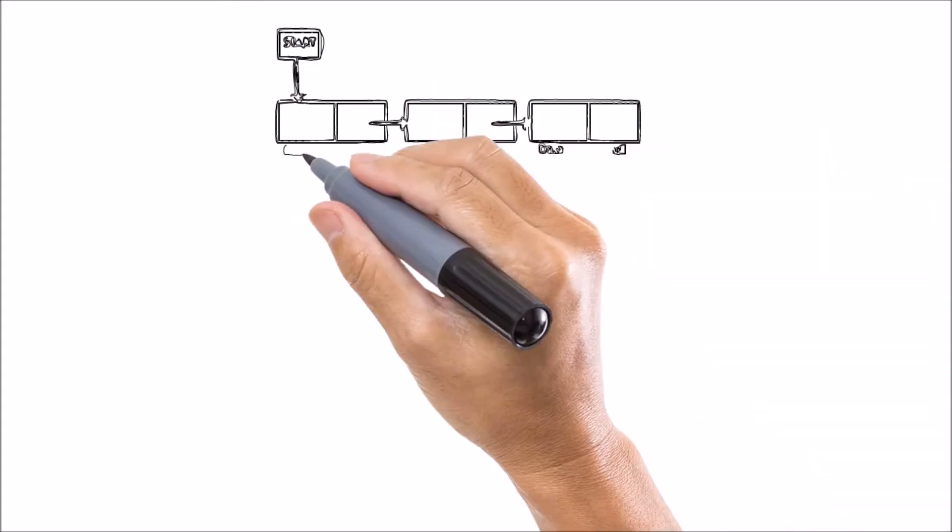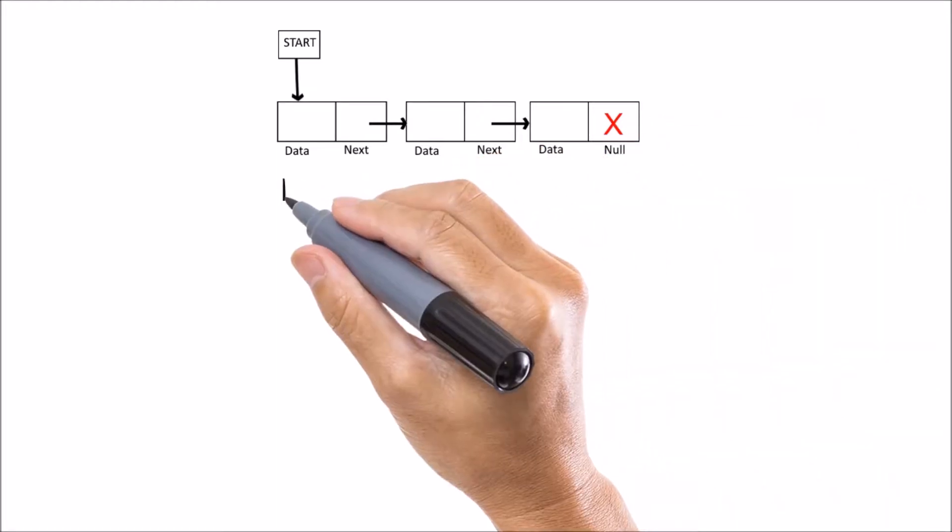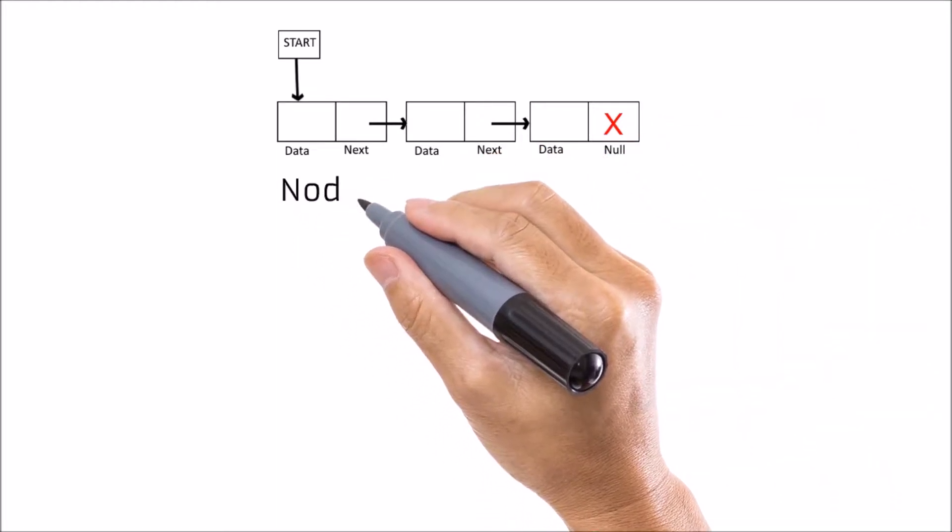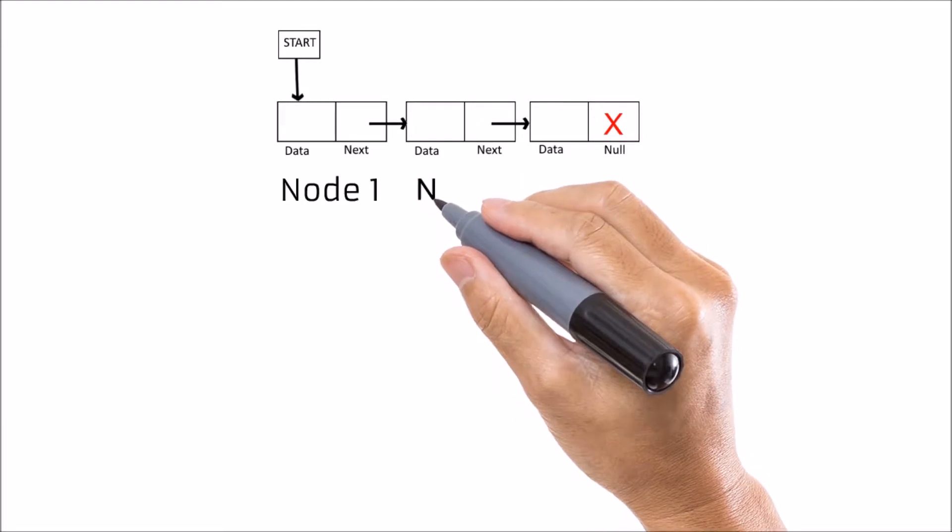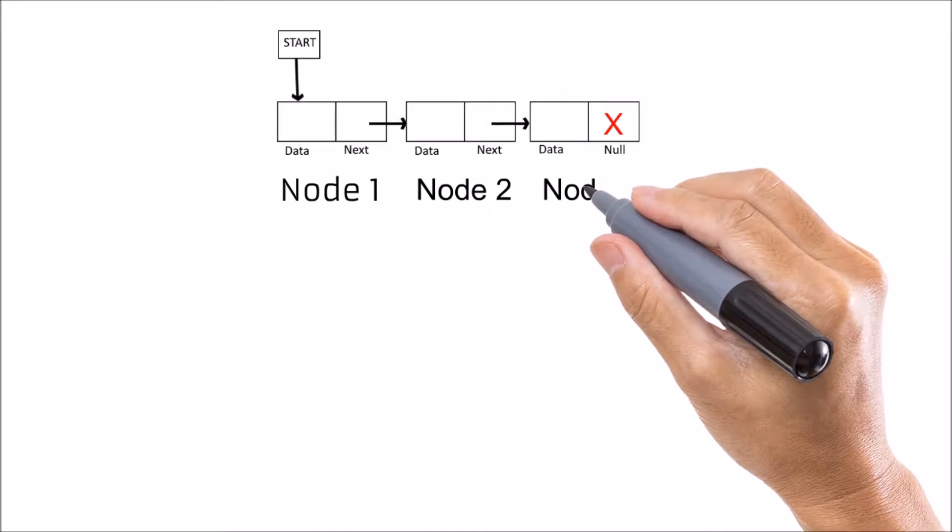So let us draw a linked list and the last node contains null. Now let's name these nodes as node 1, node 2, node 3 subsequently.